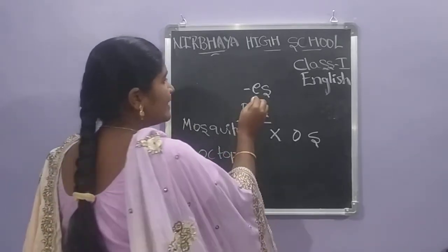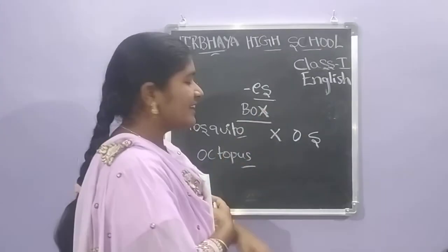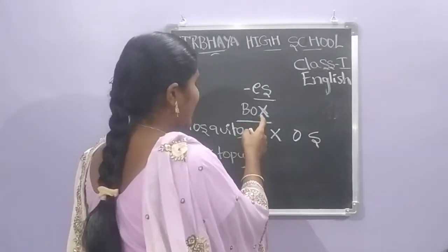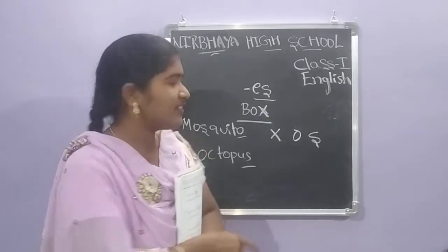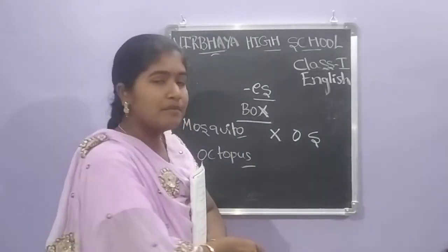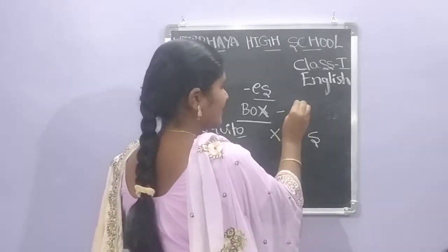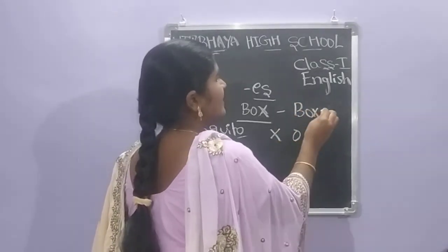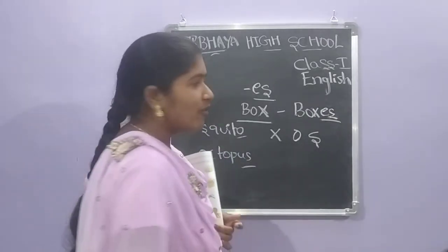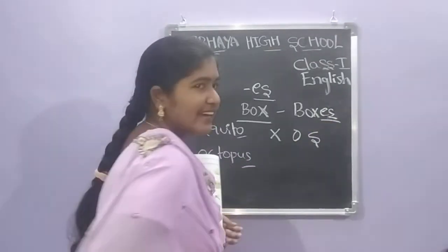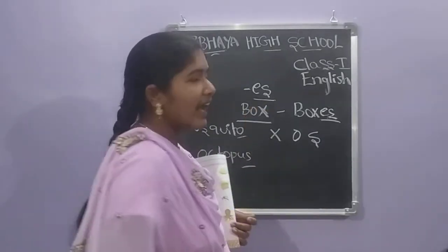We are adding ES to these words. When should we add ES? We add ES to words that end with X, O, or S. For example, box — B-O-X. The plural is boxes — B-O-X-E-S. So we are adding ES in the plural form.